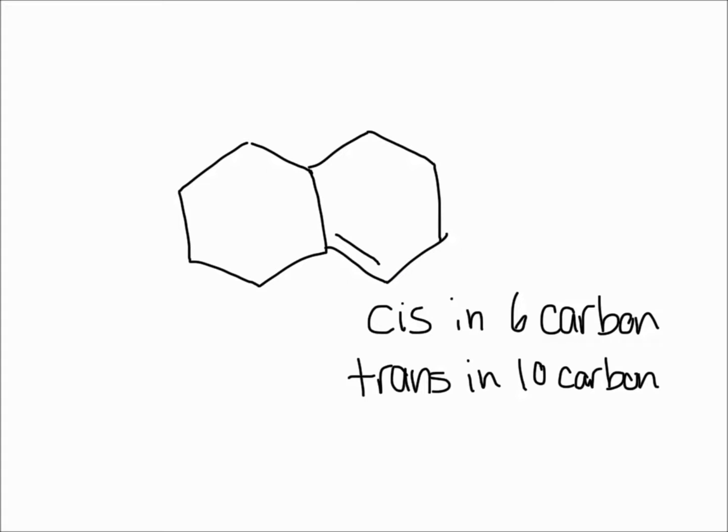You're going to have a cis double bond in the six carbon ring, so in one of these rings, and then you're going to have a trans double bond in the 10 carbon ring, so the ring that goes all the way around there. It might be a little difficult to see with this drawing, but if you take a model kit and make it, you can see that this molecule would be very stable.